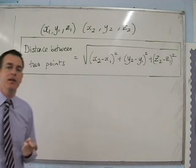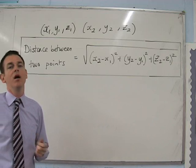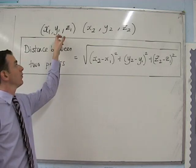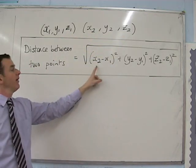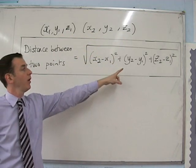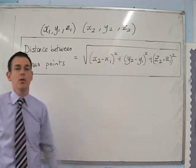If we want to find the distance between two points in space, we can use Pythagoras in three dimensions again. The distance between the points (x1, y1, z1) and (x2, y2, z2) is the square root of (x2 minus x1) squared plus (y2 minus y1) squared plus (z2 minus z1) squared, all square rooted.